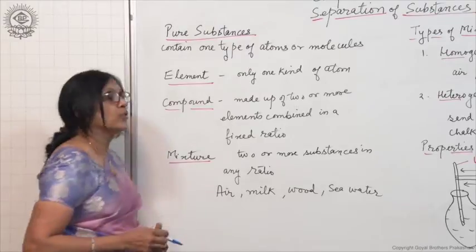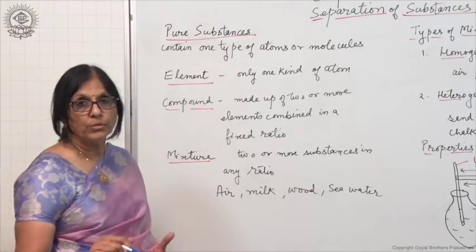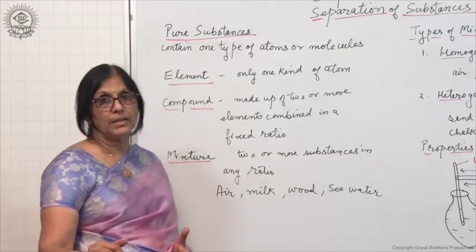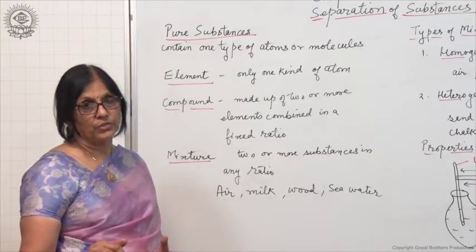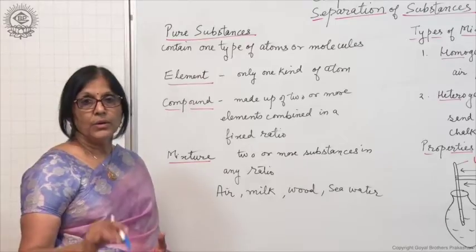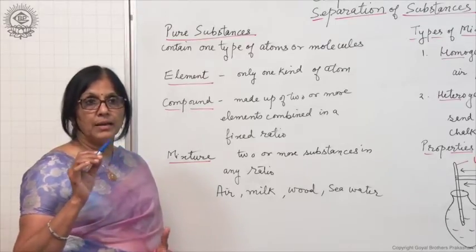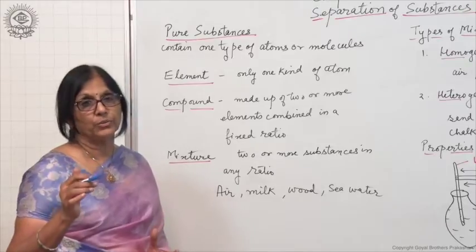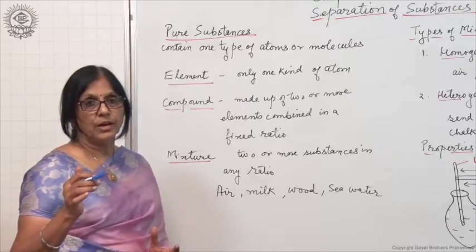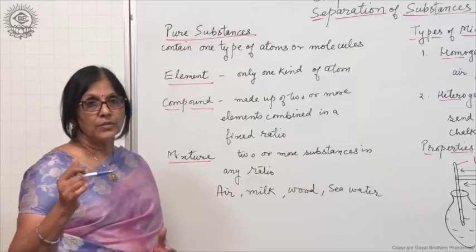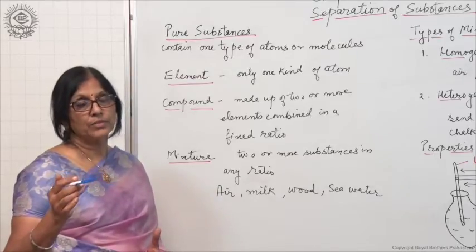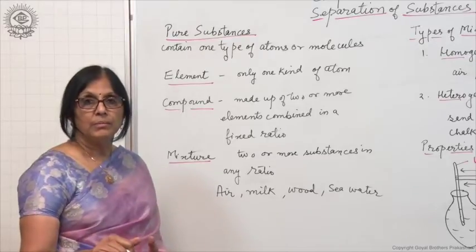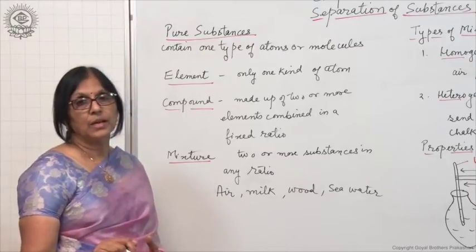The second type of pure substance is compound. A compound is made up of two or more elements which combine in a definite ratio. In a compound, different elements are present in a definite ratio, and the properties of the compound are different than the properties of the constituent elements from which the compound is made.